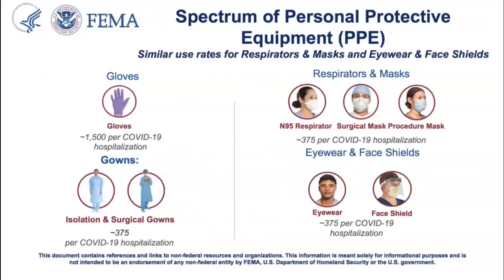Personal protective equipment covers the full spectrum: gloves, gowns, respirators and masks, eyewear and face shields. Over the course of a COVID hospitalization, we're finding approximately 350–400 pieces of individual PPE categories—outside of gloves—are used. The demand signal is quite large for the entire spectrum of personal protective equipment.